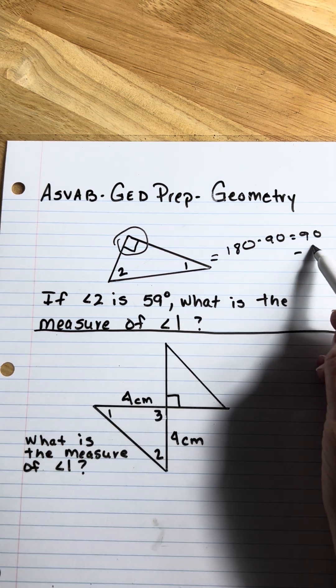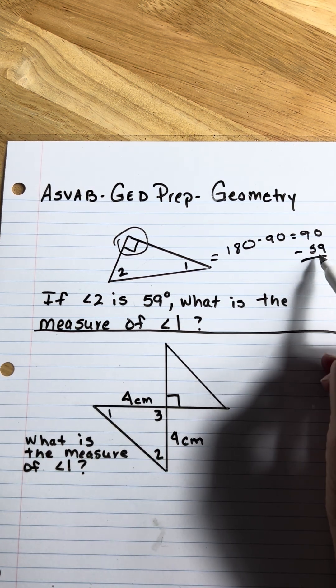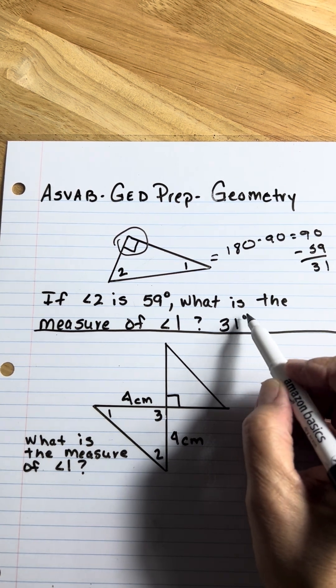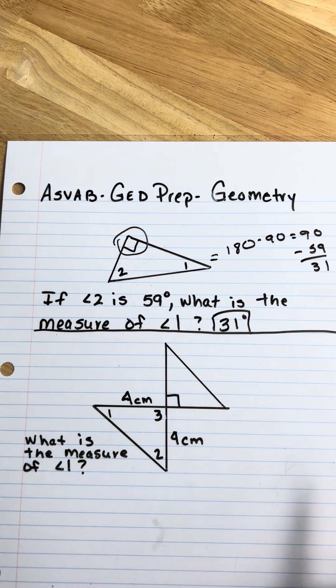If you subtract the 59 from 90, you get 31. So the measure of angle 1 is 31 degrees.